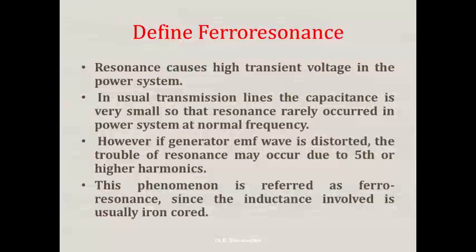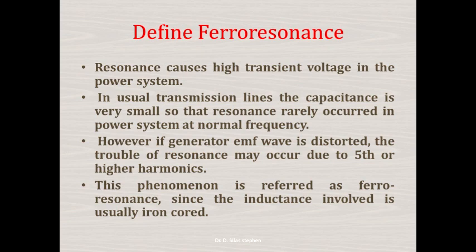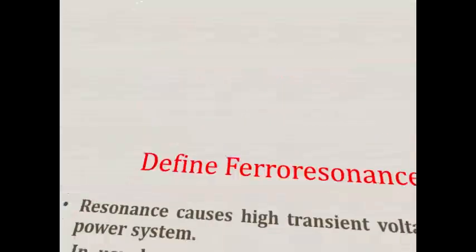Define ferroresonance. Resonance causes high transient voltage in the power system. In usual transmission lines the capacitance is very small, so resonance rarely occurs at normal frequency. However, if the generator waveform is distorted, the trouble of resonance may occur due to fifth or higher harmonics. This phenomenon is referred to as ferroresonance, since the inductance involved is usually iron-core.